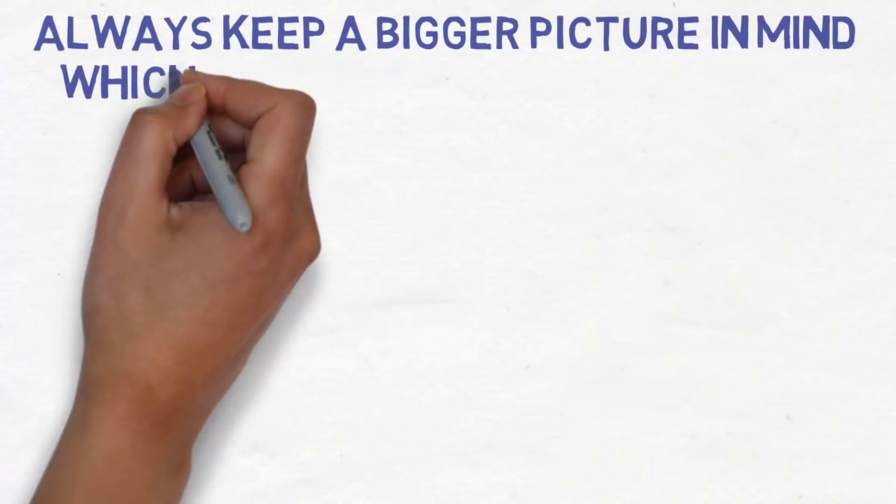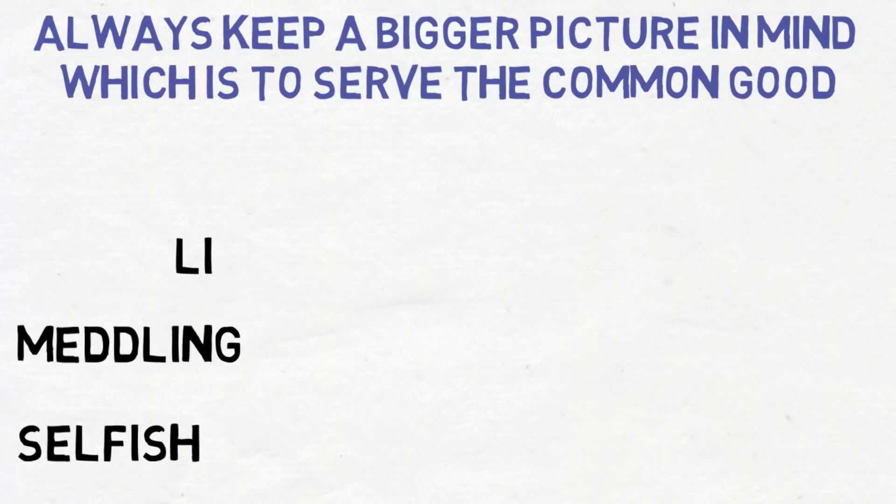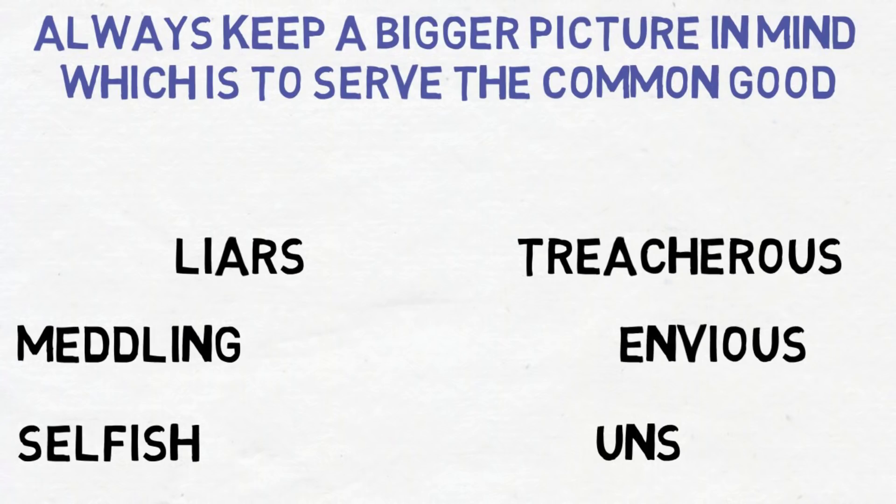Aurelius wants us to keep a bigger picture in mind, which is to serve the common good. As humans, we live to help one another including people who are selfish, meddlers, liars, treacherous, envious and unsociable.